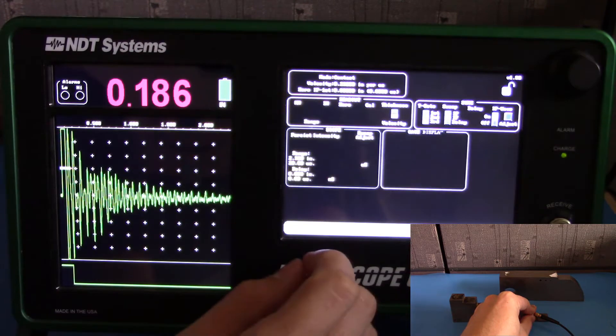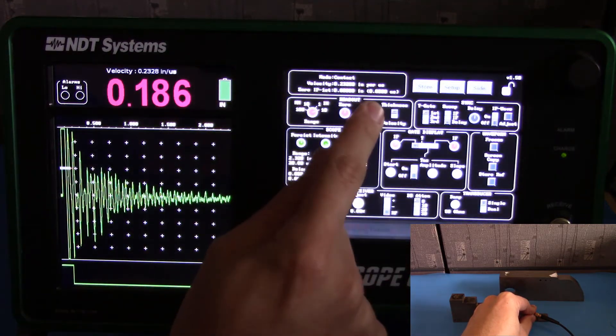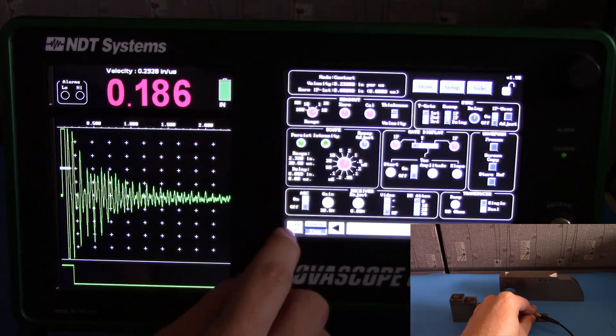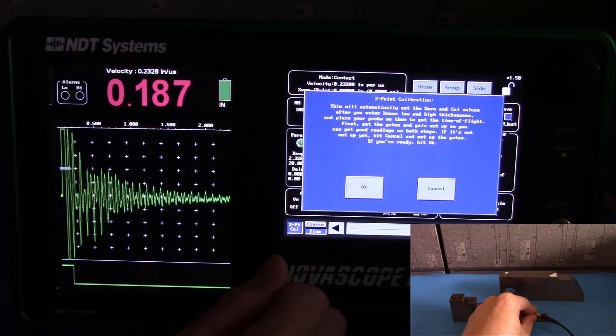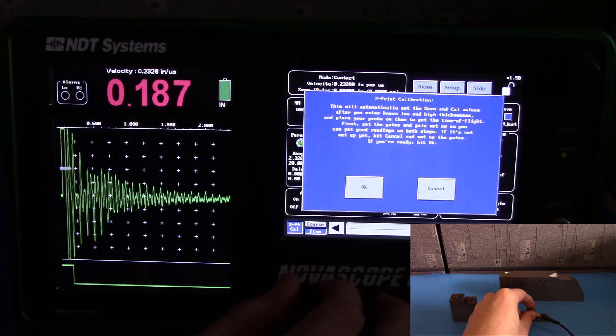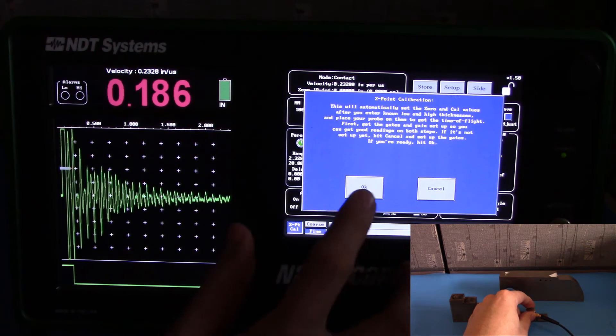Next, go back to the front. Go to the Cal radio button. And go to the 2-point cal selection that appears in the bottom left. This is where we will set up our 2-point calibration on the probe. Go ahead and hit OK.